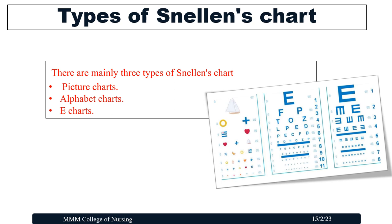There are mainly three types of Snellen's chart: picture chart, alphabet chart, and E-chart. The picture chart and E-chart are commonly used to assess the visual acuity of an illiterate person. If a person is unable to read or write, the visual acuity can be assessed using a picture chart or the E-chart, where the person has to say what picture is shown, or identify the direction the letter E is pointing — whether left or right — to determine their visual acuity.